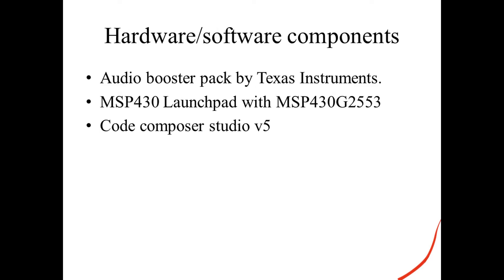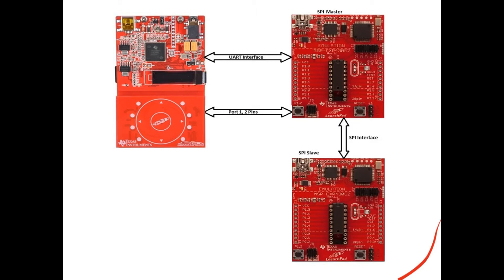The hardware and software components we are using in the project: one is the audio booster pack by Texas Instruments, second is the launch pad. We are using two launch pads with the microcontroller MSP430G2553 and the Code Composer Studio version 5 IDE. This is the circuit for the MP3 player. The communication between the two launch pads is via SPI interface, the audio booster pack is connected with the launch pad using the UART interface, and below is the Capacitive Touch interface connected directly to the pins of the launch pad.